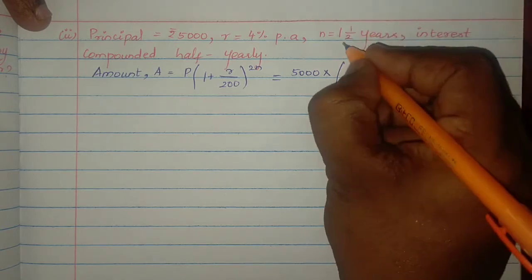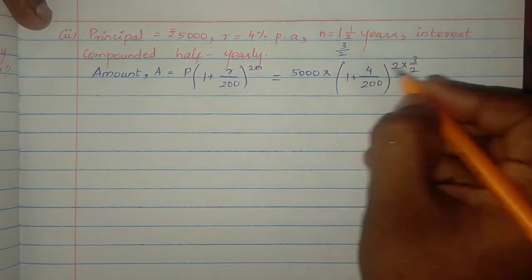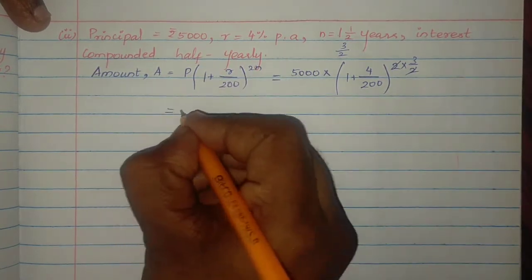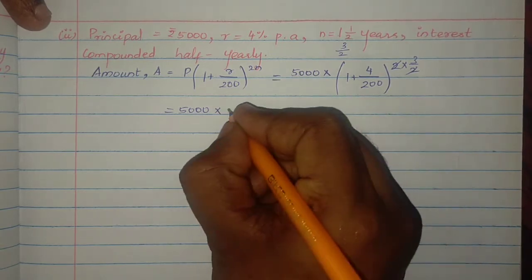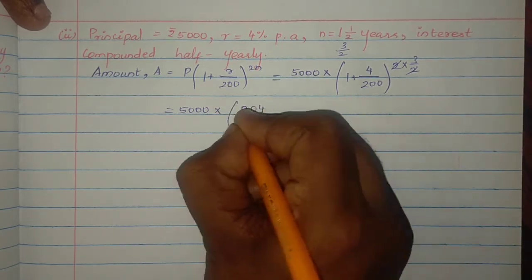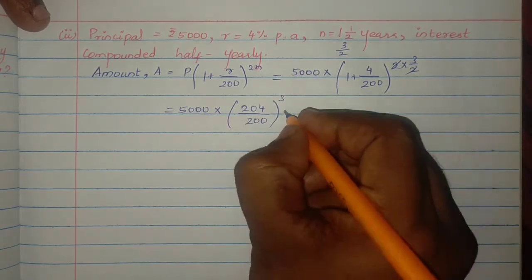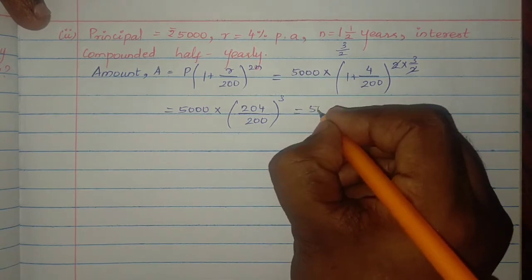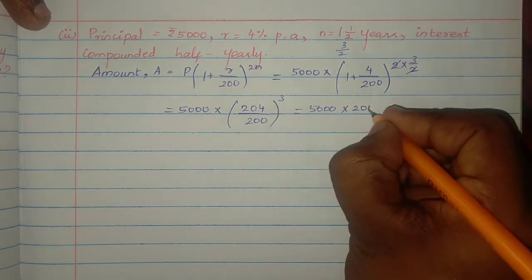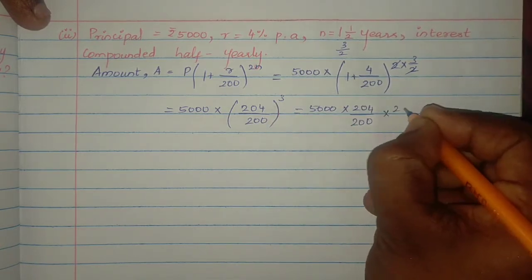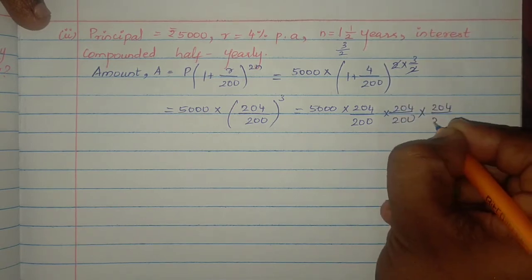Computing: 2×1=2, plus 1=3, so 3/2. The rate becomes 204/200. So the expression is 5000 × (204/200)³, which is 5000 × (204/200) × (204/200) × (204/200).